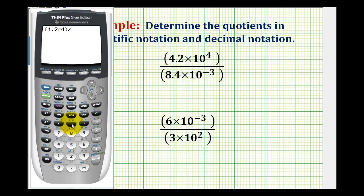And then we'll divide this by 8.4 times 10 to the negative 3. So we type in 8.4 second comma negative 3. Be careful not to enter minus 3 or you will get an error.